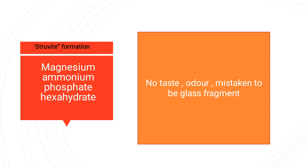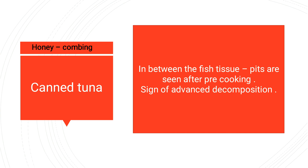Struvite (struvite white) formation is also a problem seen in the seafood industry. It is caused by magnesium ammonium phosphate hexahydrate. Struvite formation results in no taste or odor, and it is often mistaken for glass fragments, making it a significant problem during seafood processing.